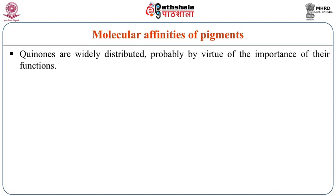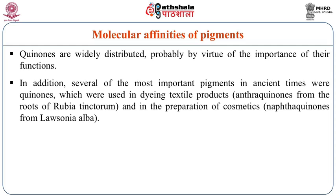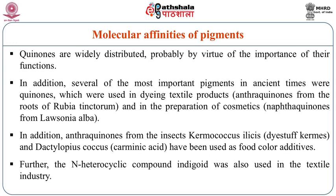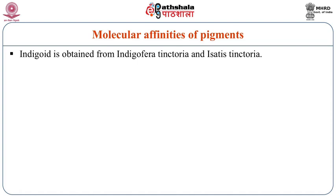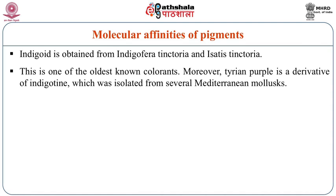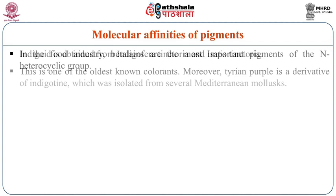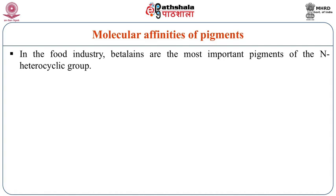Quinones are very widely distributed and probably by virtue of the importance of their functions. Several of the most important pigments in ancient times were quinones, which were used in dyeing textile products. Anthraquinones from insects have been used as food colour additives. The n-heterocyclic compound indigo was used in the textile industry; indigo was obtained from Indigofera tinctoria and Isatis tinctoria. This is one of the oldest known colourants. Moreover, the Tyrian purple is a derivative of indigotin, which was isolated from several Mediterranean molluscs. In the food industry, betalains are the most important pigments of the n-heterocyclic group.